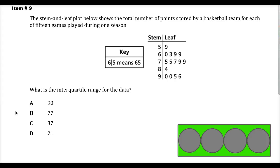Welcome, this is item number 9 from the released Spring 2014 test questions for the 7th grade Tennessee TCAP test for math. The stem-and-leaf plot below shows the total number of points scored by a basketball team for each of 15 games played during one season.